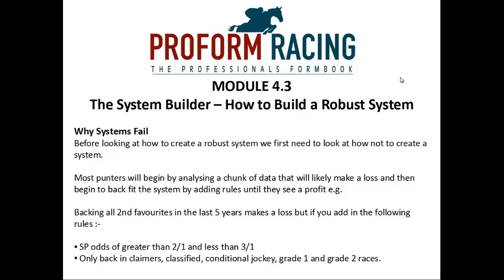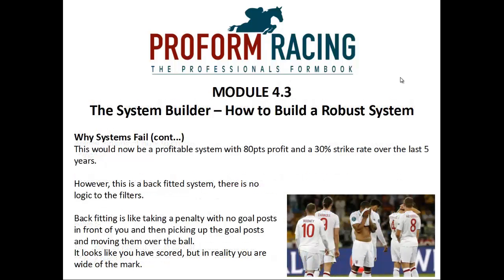Before looking at how to create a robust system, we first need to look at how not to create a system. Most punters will begin by analyzing a chunk of data that will likely make a loss, and then begin to back-fit the system by adding rules until they see a profit. An example would be backing all second favorites in the last five years, which makes a loss. But if you add in rules such as SP odds greater than 2-to-1 and less than 3-to-1, and only backing claimers, classified, conditional jockey, grade 1 and grade 2 races, then this would now be a profitable system with 80 points profit.